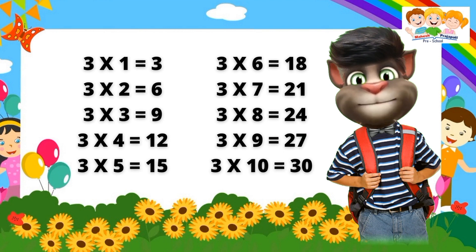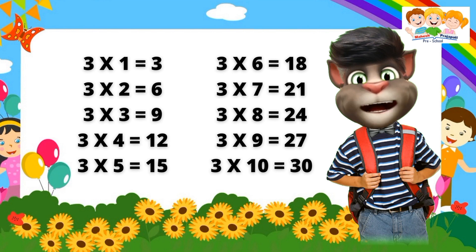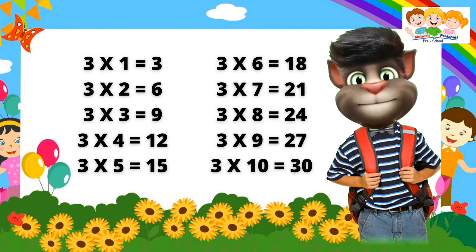Three nine's are twenty-seven. Three ten's are thirty. Three one's are three. Three two's are six. Three three's are nine. Three four's are twelve. Three five's are fifteen. Three six's are eighteen. Three seven's are twenty-one. Three eight's are twenty-four. Three nine's are twenty-seven. Three ten's are thirty.